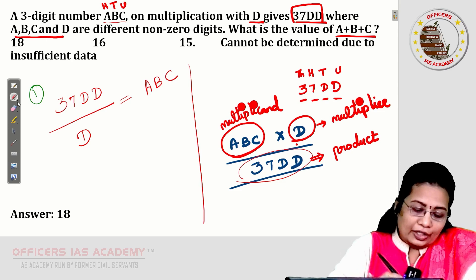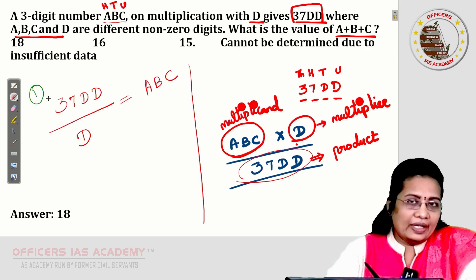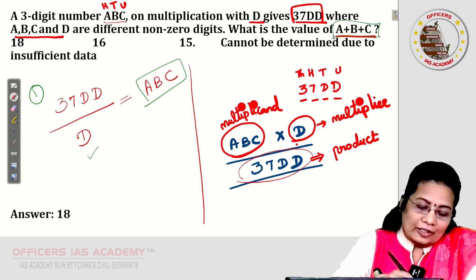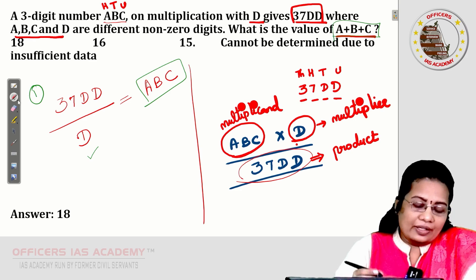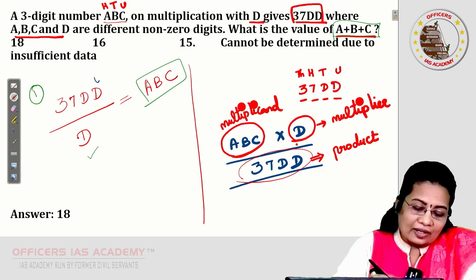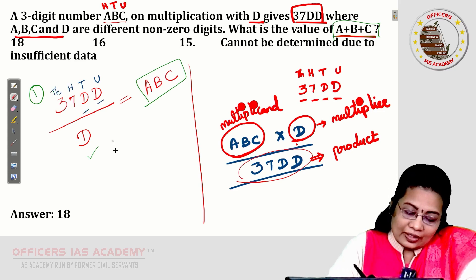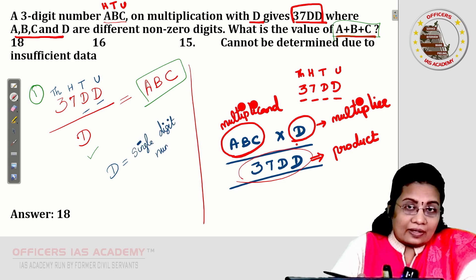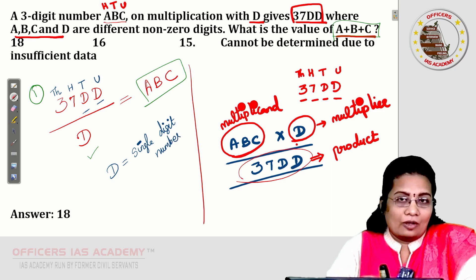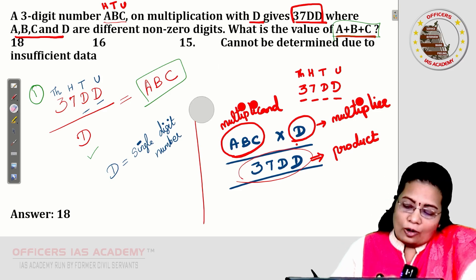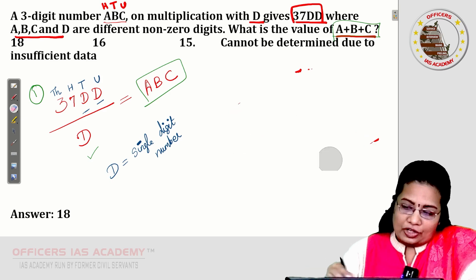We need to find what D is. D is a single digit number, appearing in both the units and tens place of 37DD. So we need to consider any single digit number and substitute it for D to find ABC. Let's look at the approach to solve this problem in the examination.